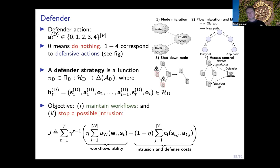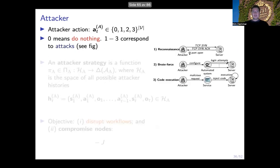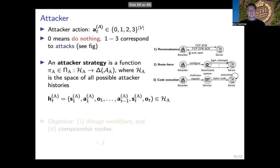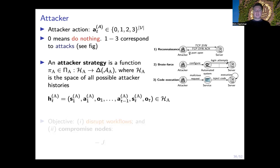Based on this signal, we consider that the defender can take four types of response actions: it can migrate nodes between zones, block or redirect flows, shut down nodes, and do access control. When deciding between these actions the defender considers the entire history of observations, which is why we define a defender strategy as a mapping from the history space to a distribution over the action space. The goal of the defender is to balance two conflicting objectives: on the one hand maintaining services to clients, and on the other hand quickly responding to a possible intrusion.